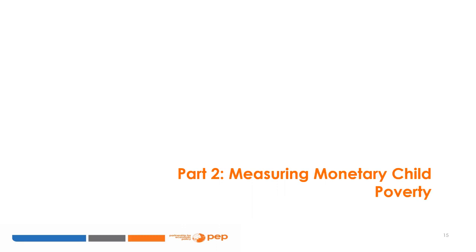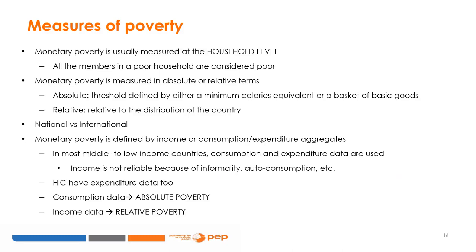Now that we know why child poverty matters, let's see how we measure it. Monetary child poverty is measured using monetary aggregates, usually income or expenditure, at the household level. If the aggregate falls below a certain poverty line, then the household is poor. All the people in a poor household are classified as poor.